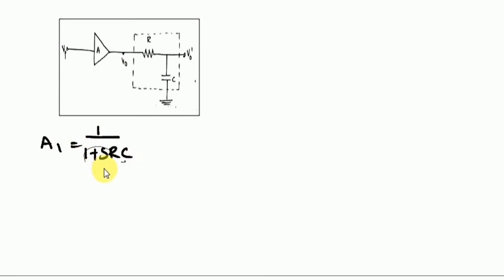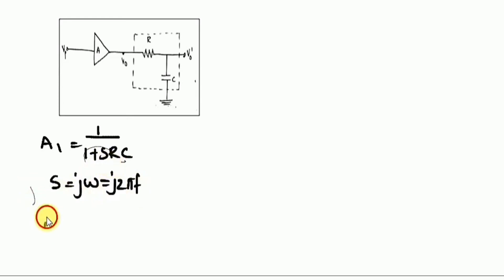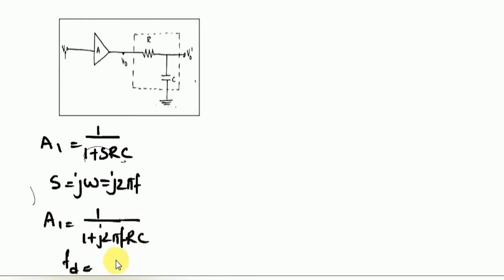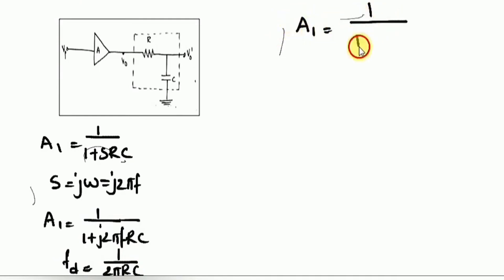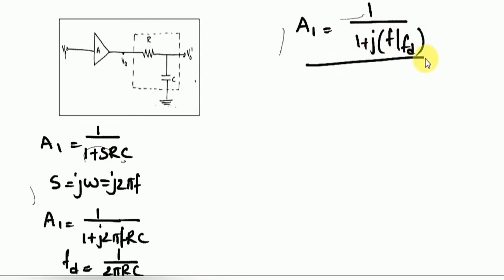Now we convert this S-domain expression to the frequency domain using S = jω, where ω = 2πF. Substituting, A1 = 1/(1 + j·2πF·RC). Assuming the dominant frequency FD = 1/(2πRC), the value of A1 in terms of dominant frequency is written as 1/(1 + j·F/FD). This is the final external compensated network gain in the frequency domain.